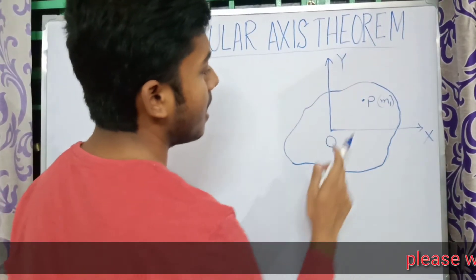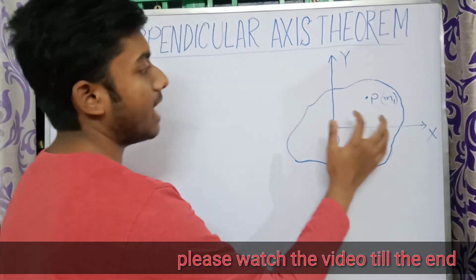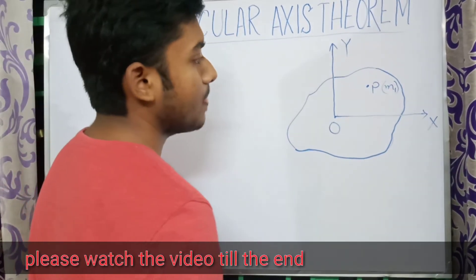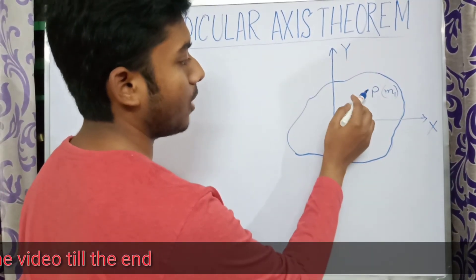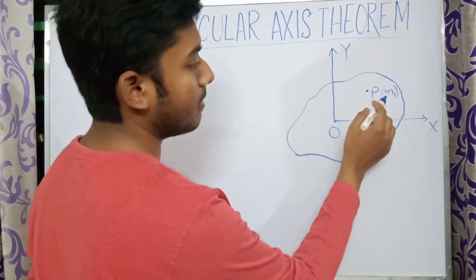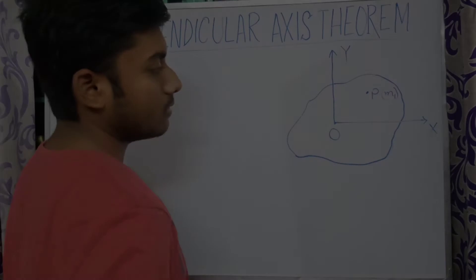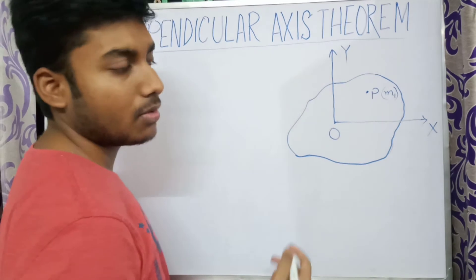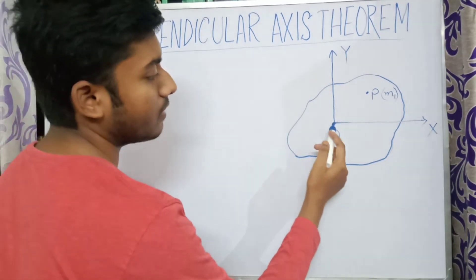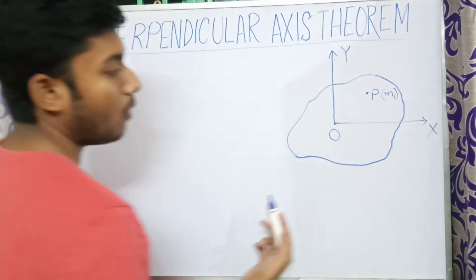Let us consider a plane lamina with two axes: the x-axis and the y-axis. Suppose at point P we have a point mass m1. Now we will find the moment of inertia of the mass m1 about the axis Ox.